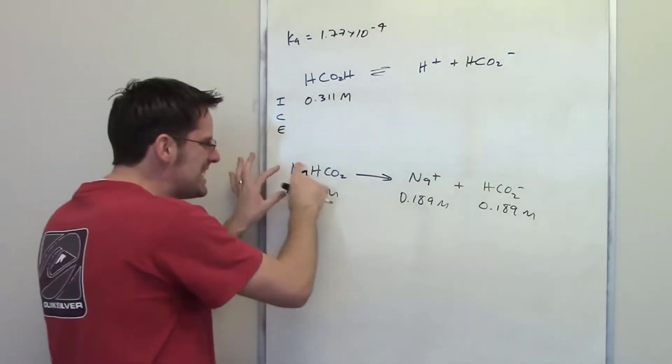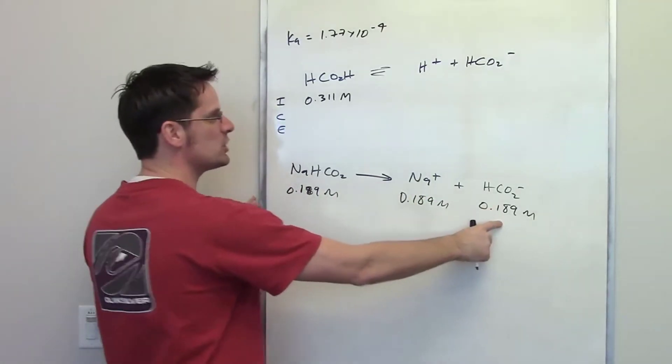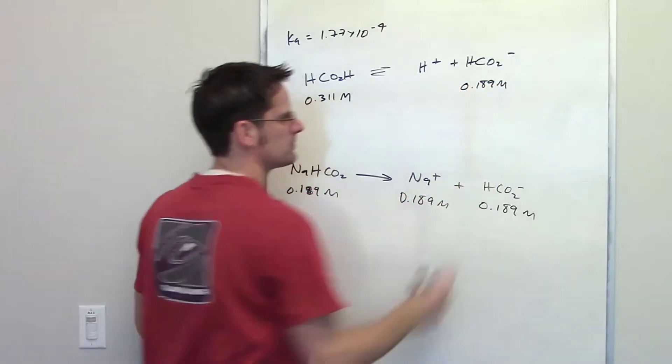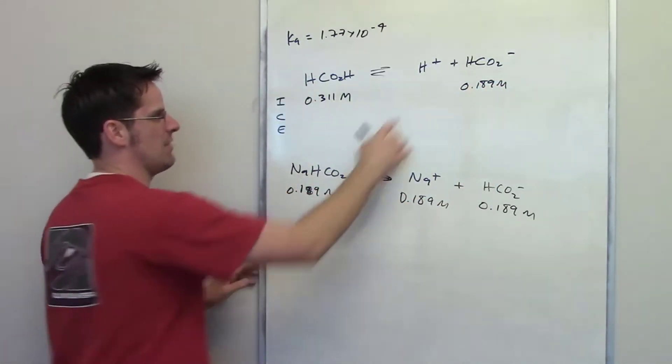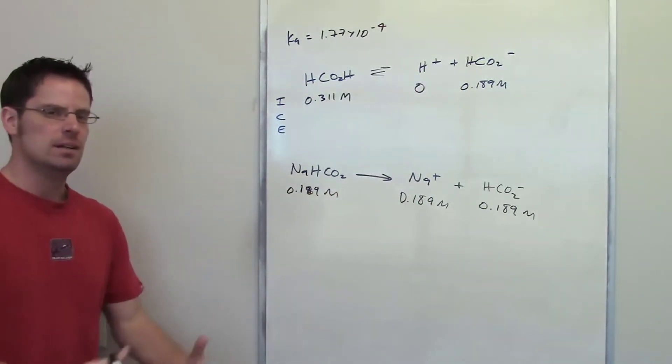Normally it would be zero if we didn't have this thing in the solution, but because we have this thing in solution, the initial concentration right at the beginning becomes 0.189 molar. The initial concentration of H plus, however, remains zero. Got it? Let's move forward then.